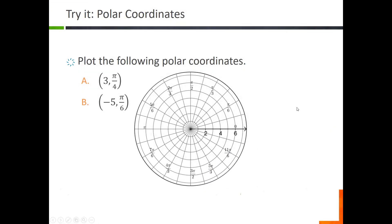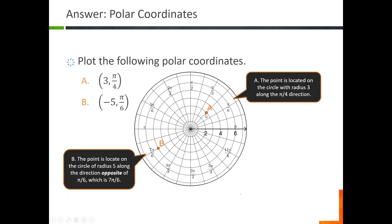Let's try a couple of examples of plotting coordinates. The first one is three comma pi over four. The three is r — that's your distance from the origin, your radius — and pi over four is the direction. To plot this point, I want to go a distance of three units from the origin in the direction of pi over four. So I want to be on the third circle, going in the pi over four direction. That point is on the third circle — the circle with radius three — in the direction of pi over four.